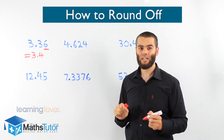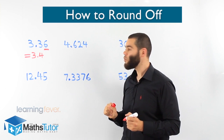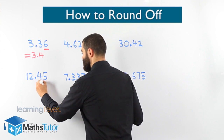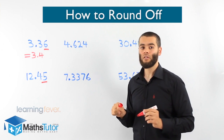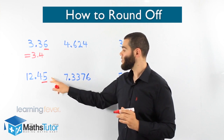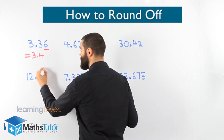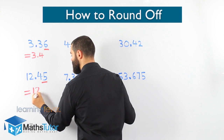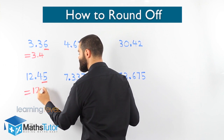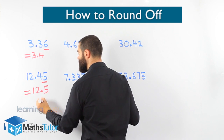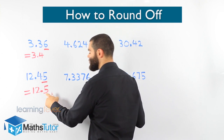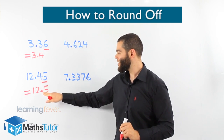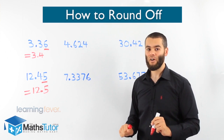12.45 — round off to one decimal place. We look for the number on the right of the first decimal place, which is the 5. Can it push us up? Is it five or more? Yes — so the 5 pushes the 4 up and it becomes 12.5. The 5 has the muscles to push it up, so 12.45 rounded to one decimal place becomes 12.5.